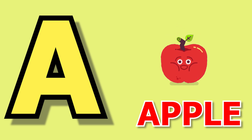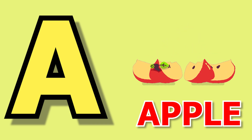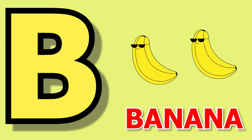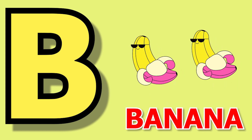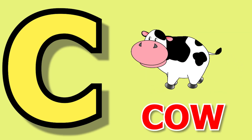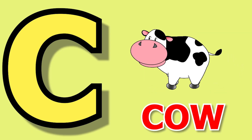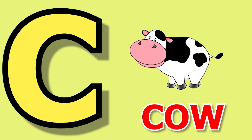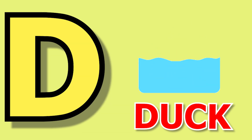A for apple, apple means save. B for banana, banana means kela. C for cow, cow means gay. D for duck, duck means buttock.